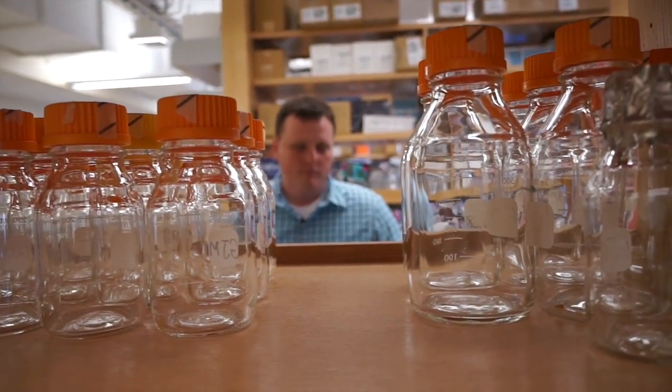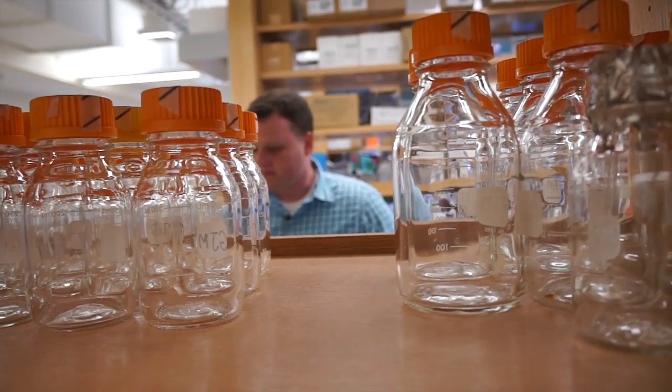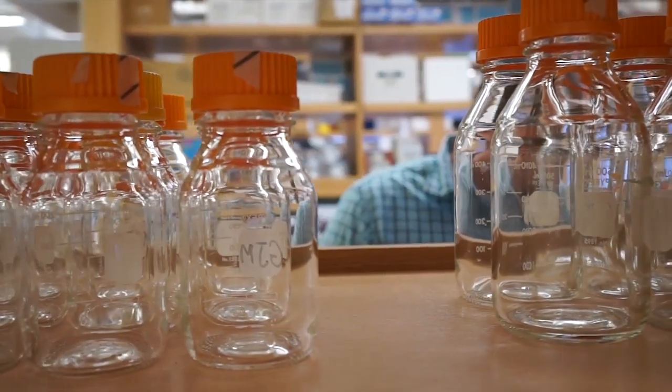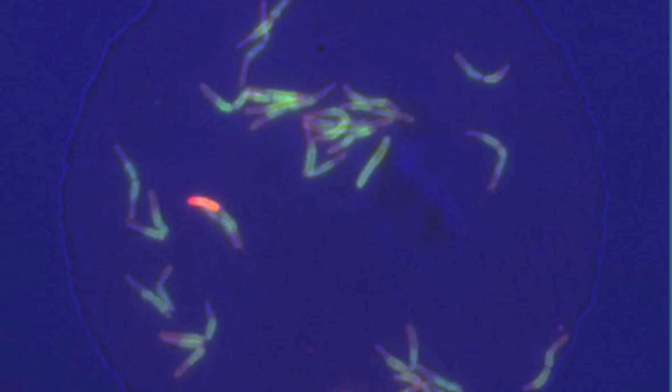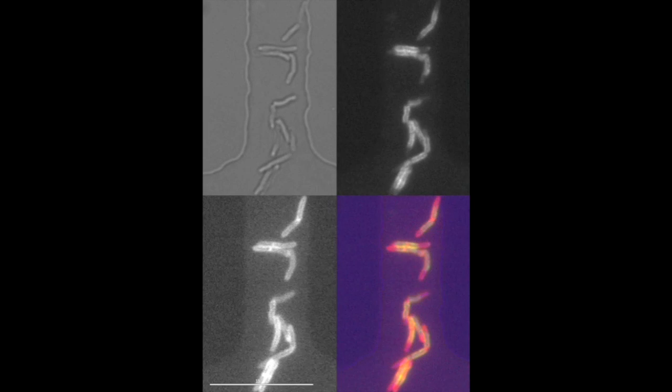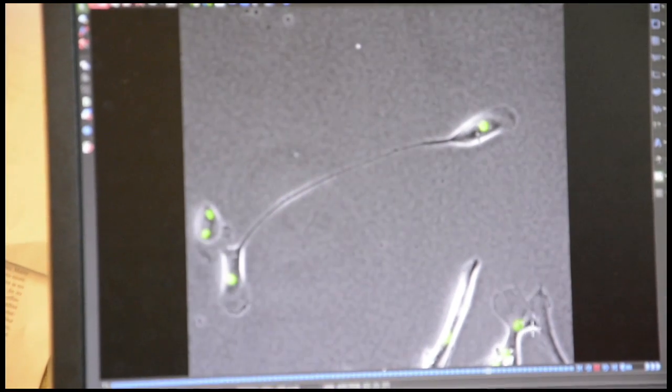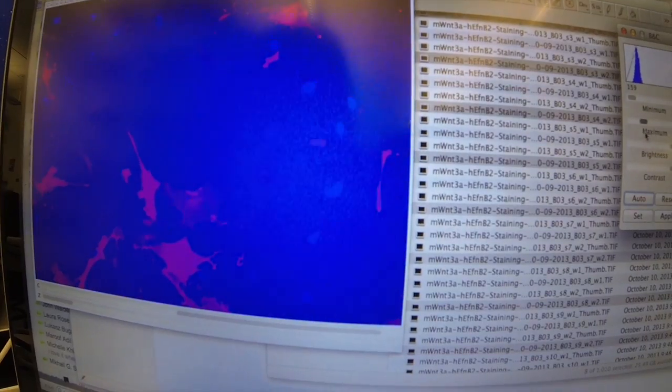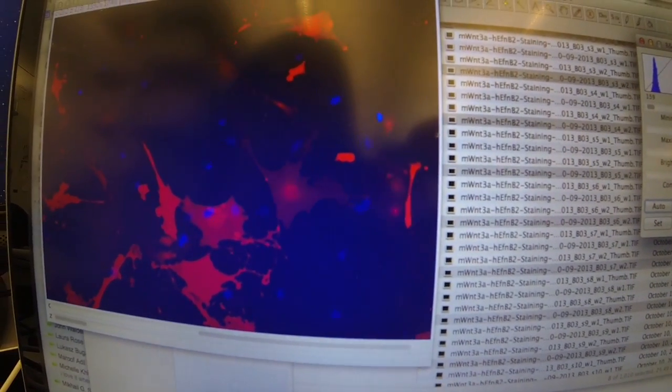I use induced pluripotent stem cells, so what they are are stem cells that we can create from adult cells from any person. So essentially, we can take a person's blood or a little bit of their skin, and we can actually, in the lab, turn them into stem cells like they would be in an embryo. Cells that essentially can make any type of cell type in the body.